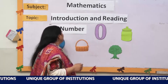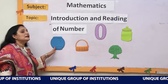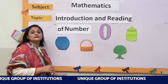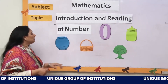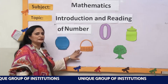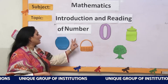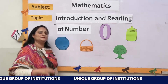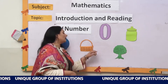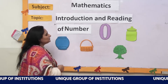0 means nothing, so tell me, how many fish are there in this fish pot? 0, because there is no fish. Here I have a basket — a fruit basket. How many fruits are there in this basket? There are no fruits, that means there are 0 fruits. Let's make 0 with your thumb and finger.